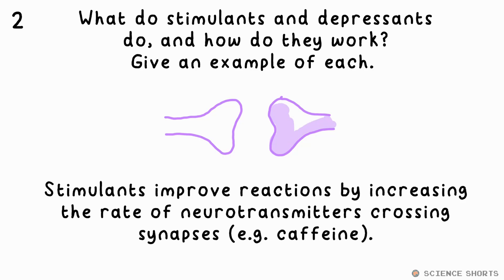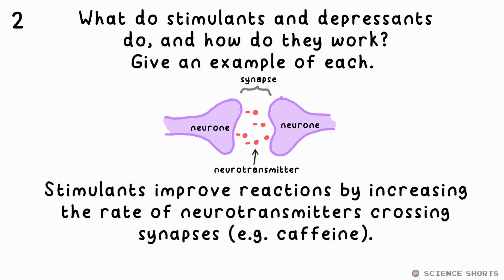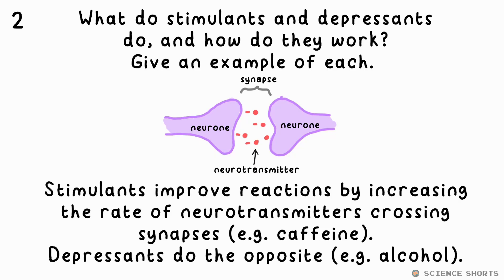A stimulant will decrease your reaction time or improve your reactions. It increases the rate at which neurotransmitter chemicals are released across the synapses between neurons. An example would be caffeine. A depressant does the opposite — it impairs your reactions. It reduces the amount of neurotransmitters crossing the synapse. An example is alcohol.